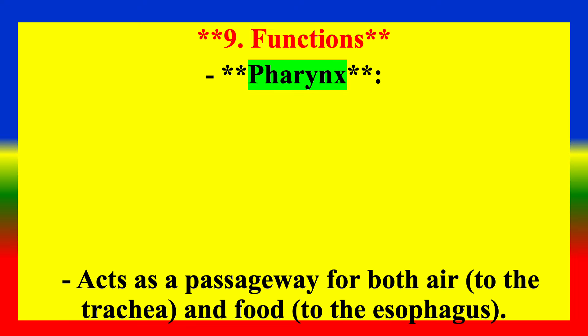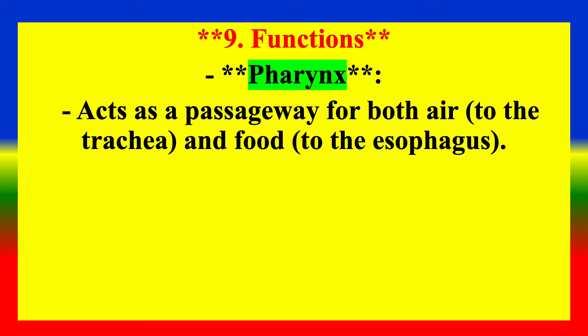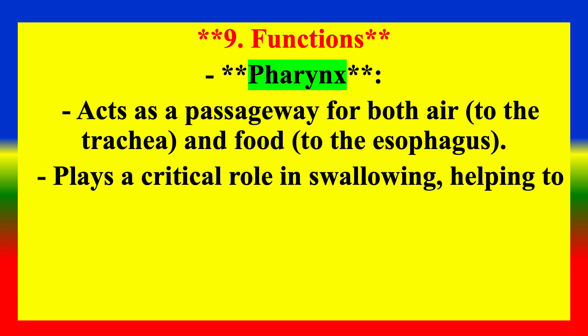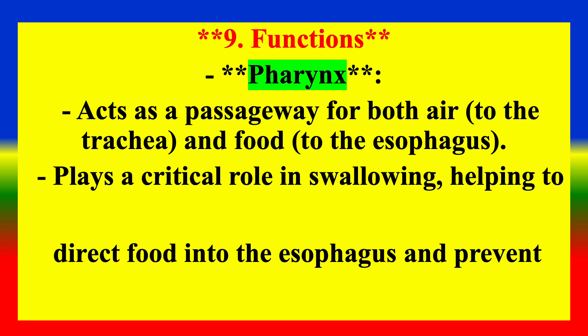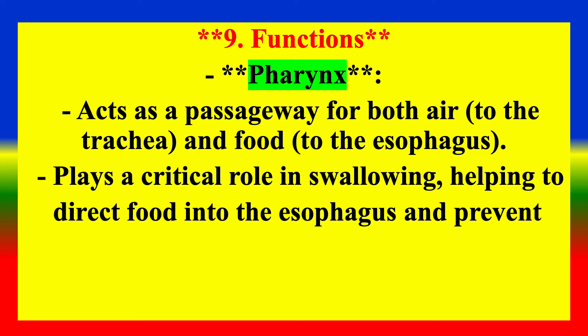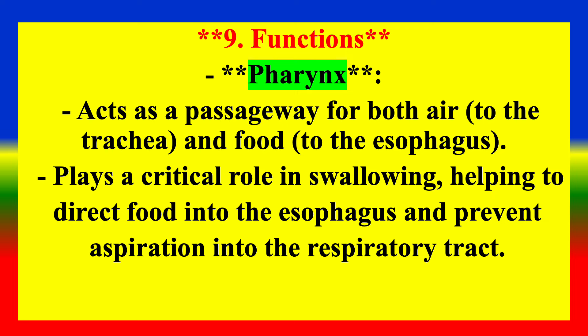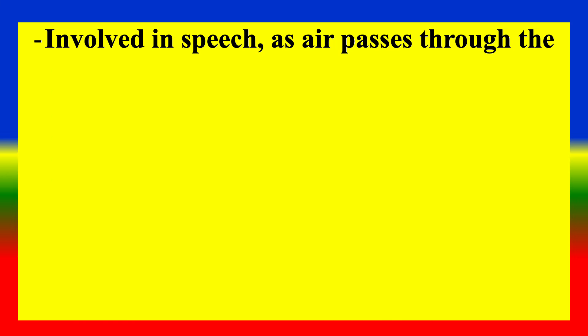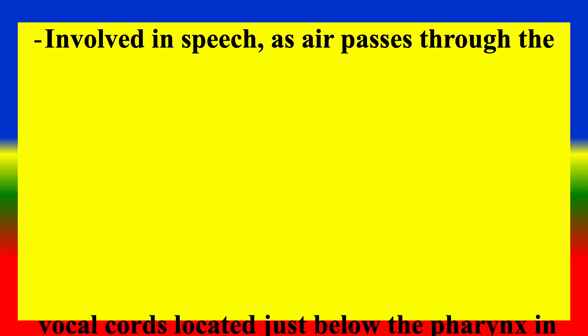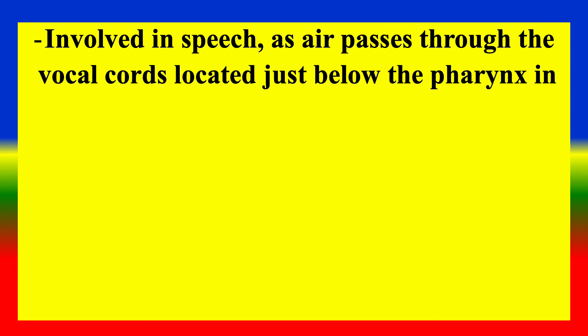Functions — Pharynx: Acts as a passageway for both air and food. Plays a critical role in swallowing, helping to direct food into the esophagus and prevent aspiration into the respiratory tract. Also involved in speech, as air passes through the vocal cords located just below the pharynx in the larynx.